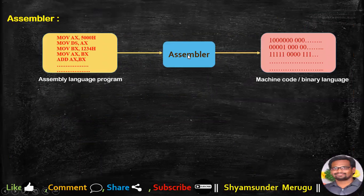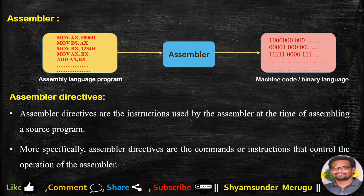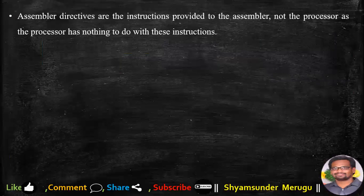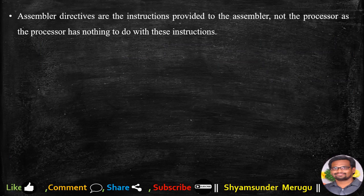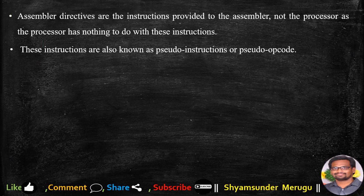An assembler is a program that accepts an assembly language program and converts it into machine code or binary language. Assembler directives are the instructions used by the assembler at the time of assembling a source program. More specifically, they are commands that control the operation of the assembler — provided to the assembler, not to the processor, as the processor has nothing to do with these instructions. These are also known as pseudo instructions or pseudo opcodes.